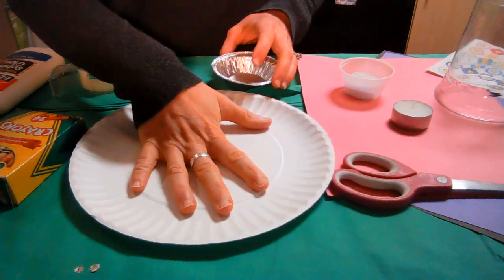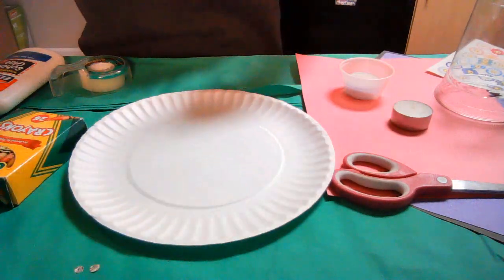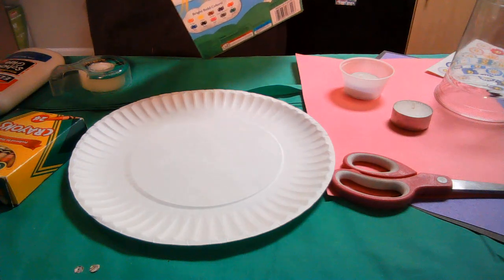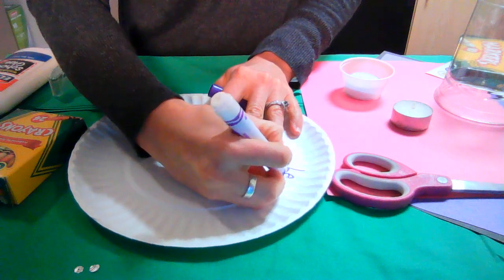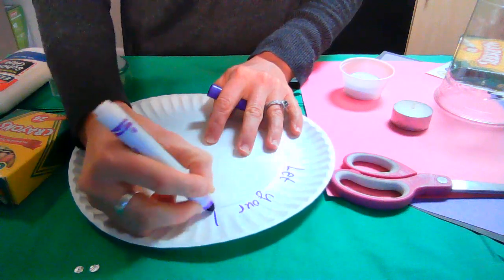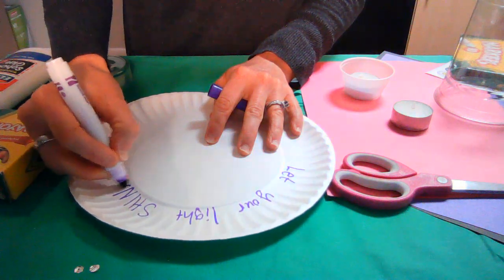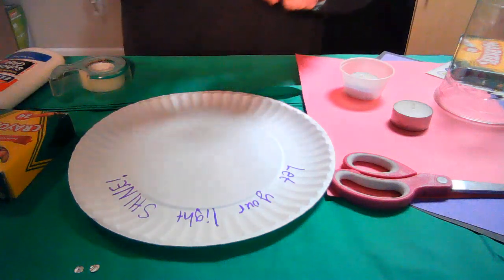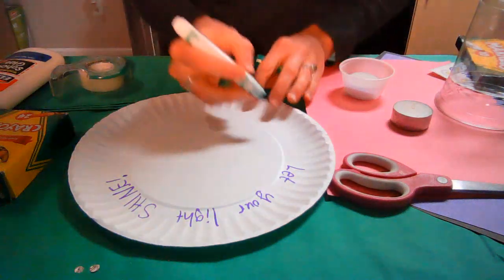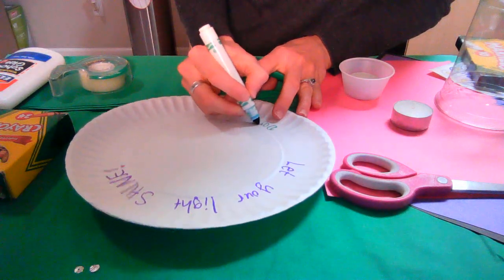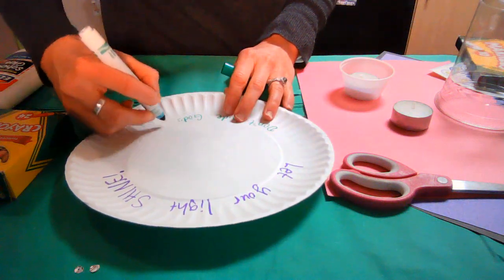So we're starting out with our plate or our paper as our base. We're going to start by decorating that. We're going to say "let your light shine." And then down here, let's say something like "don't hide God's love."